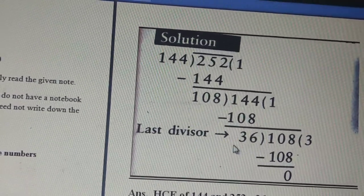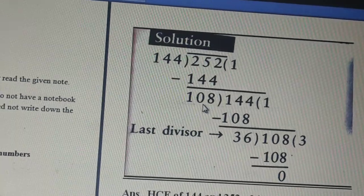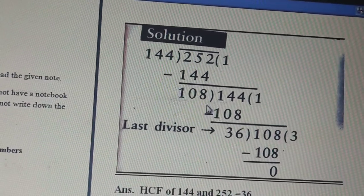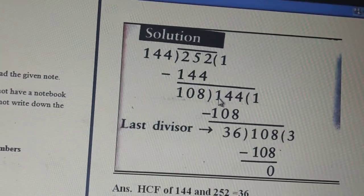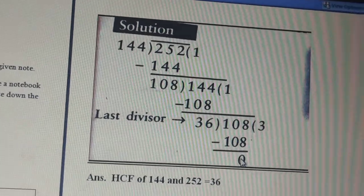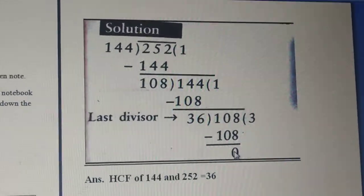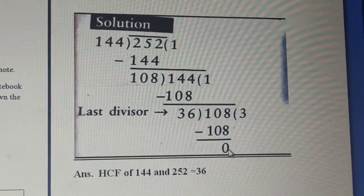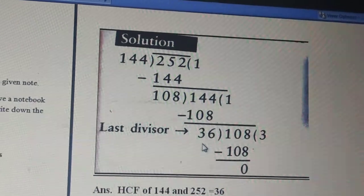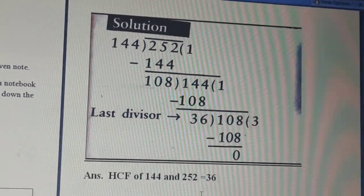We repeat the same process: the remainder 36 becomes the new divisor, and the previous divisor 108 becomes the new dividend. 36 × 3 = 108, so we get a remainder of 0. We continue dividing until we get remainder 0. Since we got 0, our last divisor is the HCF. Our last divisor was 36, so the HCF of 144 and 252 is 36.